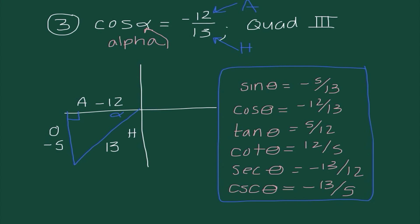I did make one major mistake — all of these should say alpha, not theta. This brings up a good lesson: variables just represent an unknown. If I'm labeling a missing side I could call it x, y, z, m — whatever I want. Same with an angle, technically we could call it whatever we want. However, in this particular problem, since alpha is defined for me already, I have to use alpha. I would be incorrect putting theta everywhere, so learn from my mistake.